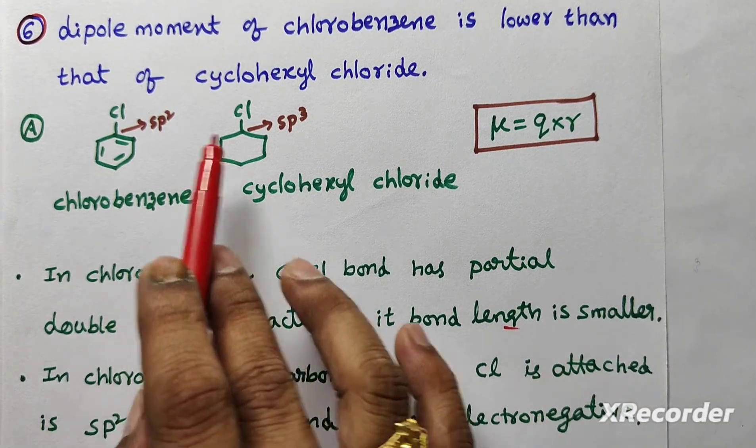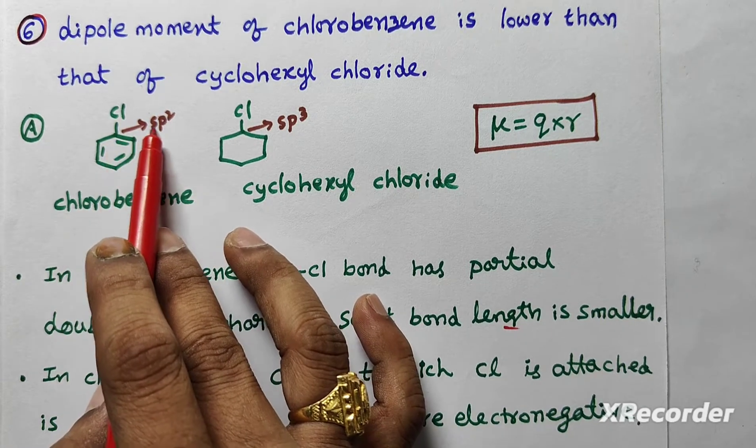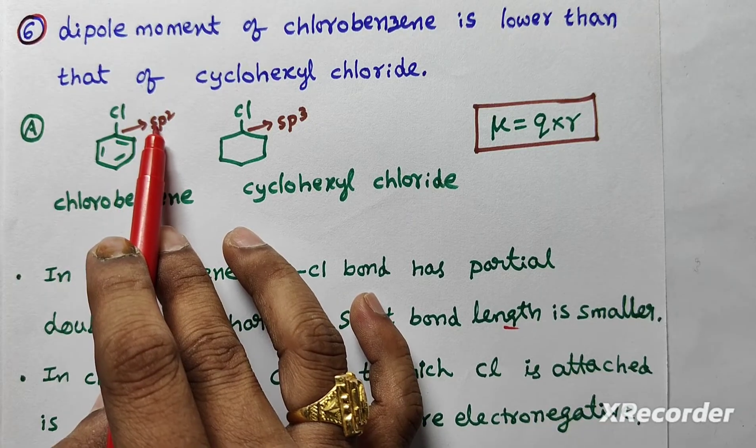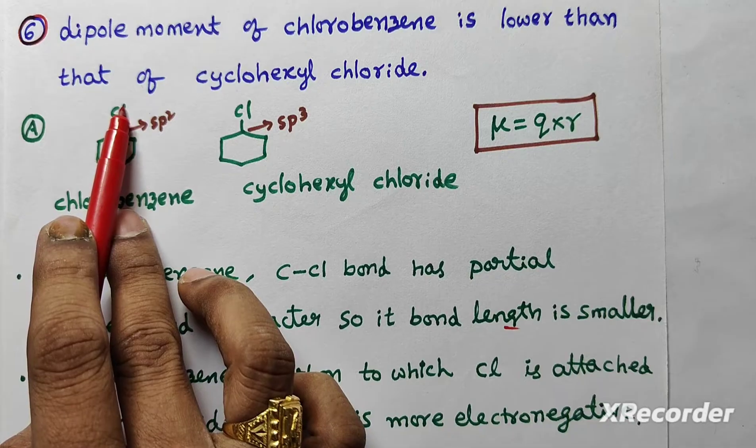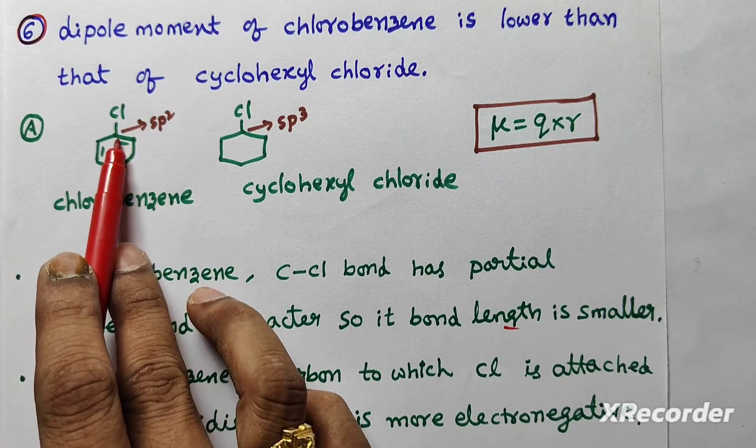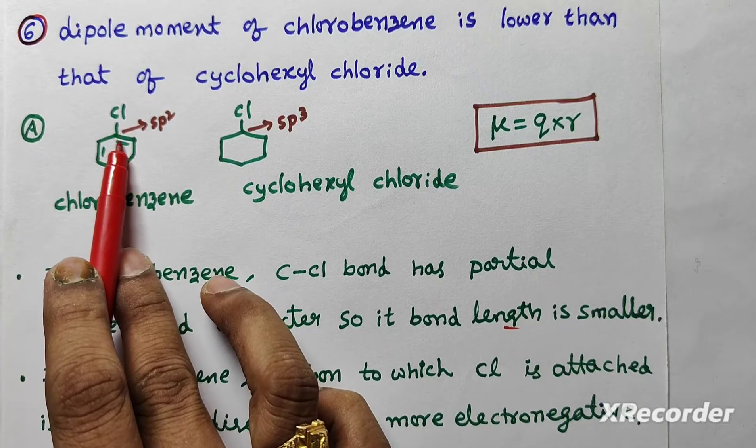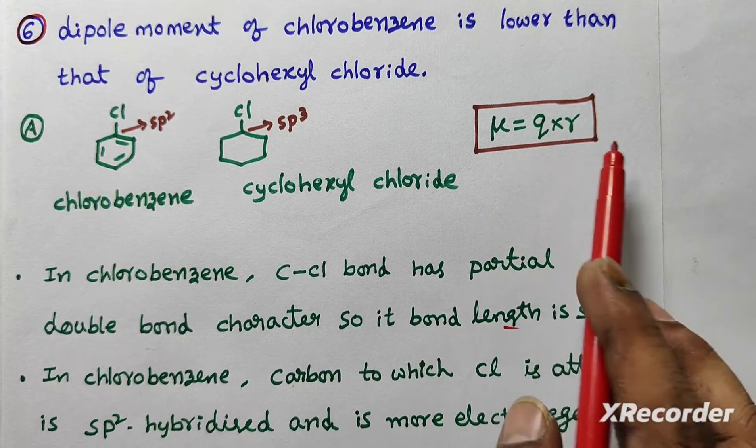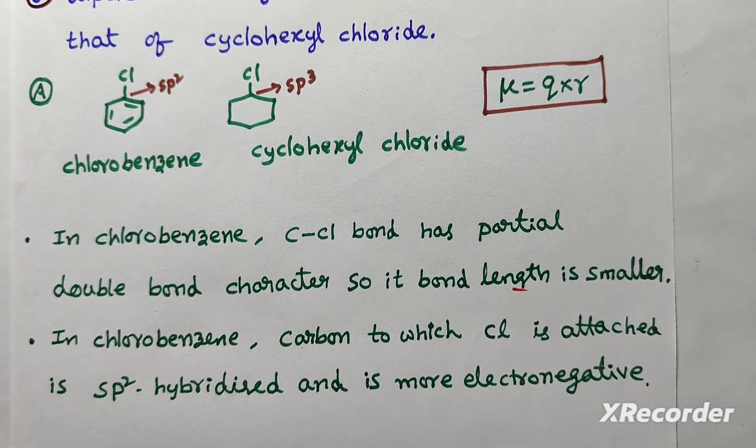Second reason, here, carbon undergoes SP2 hybridization. Double bond is there. SP2 hybridization, which is more electronegative. So S character is more. So electronegativity also more. Chlorine is more electronegative. Carbon also more electronegative. So electronegativity difference is less. Polarity is less. So charge separation also less. So Q is less. Overall dipole moment also less. You can note down these two reasons.